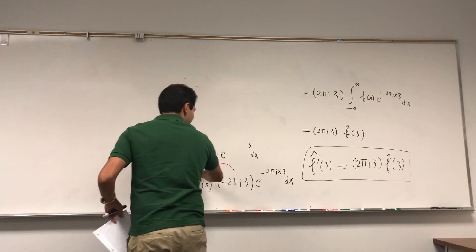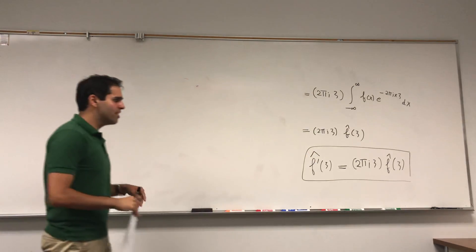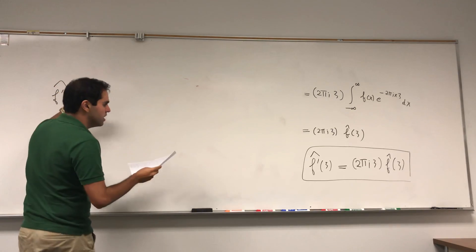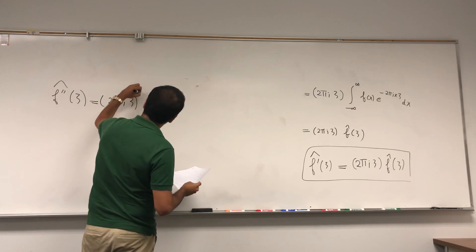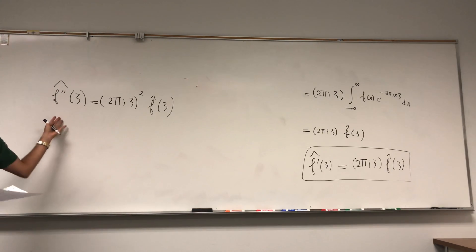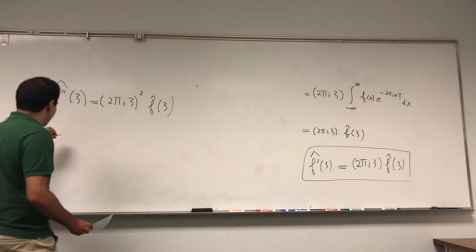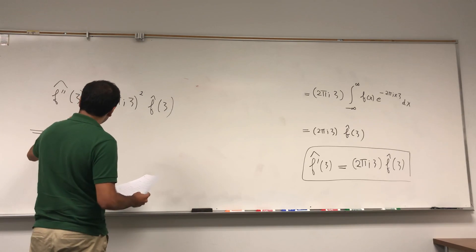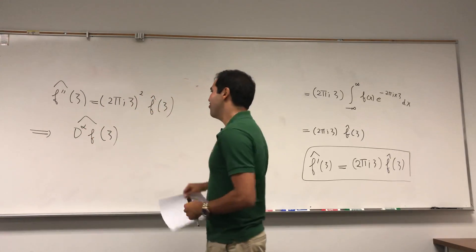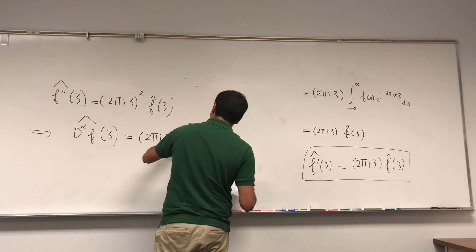Why is that important? Notice there are no minus signs because two minuses cancel out. You can do the same calculation and get that the Fourier transform of the second derivative equals (2πiξ)² times f̂(ξ). In fact, this motivates the definition of the fractional derivative. You might guess — and this is how people define fractional derivatives in papers — that the Fourier transform of the fractional derivative gives (2πiξ)^α times f̂(ξ).